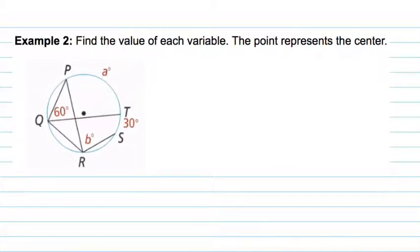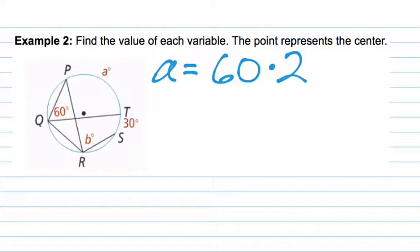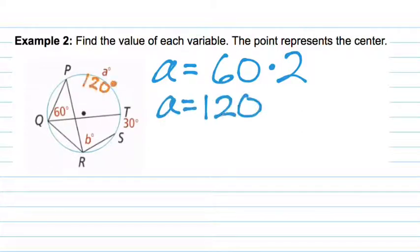For this practice problem, pause the video and see if you can work it out yourself, then resume when you're ready. We're finding the value of each variable. Let's start with A. A is representing the arc from P to T, and since the arc is double the inscribed angle, we do 60 times 2, giving us 120 degrees for the value of A.